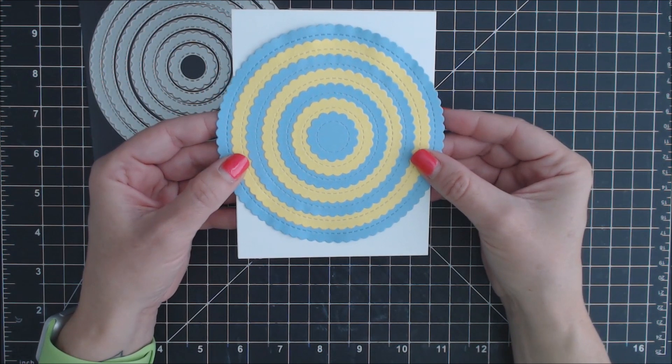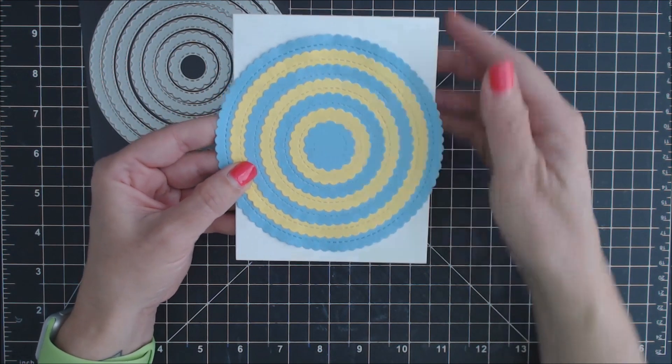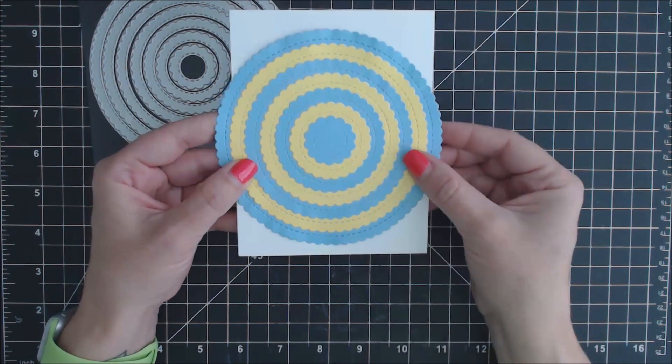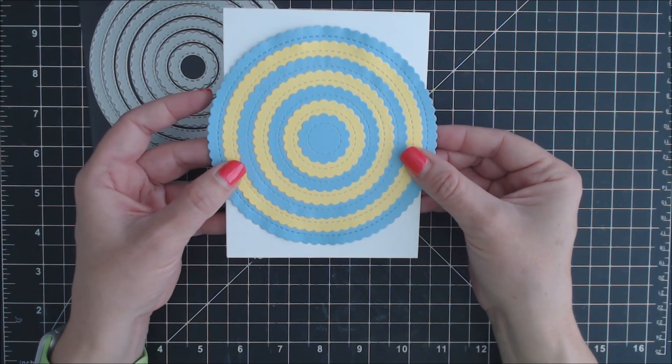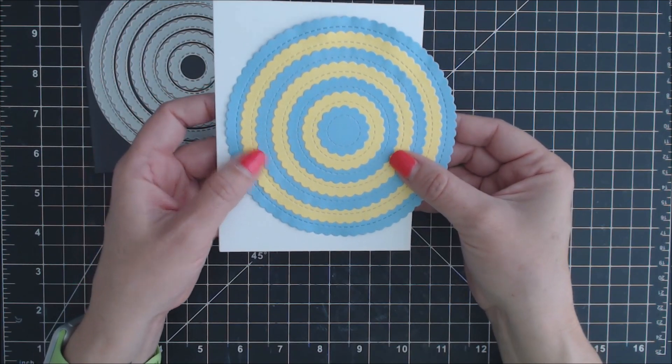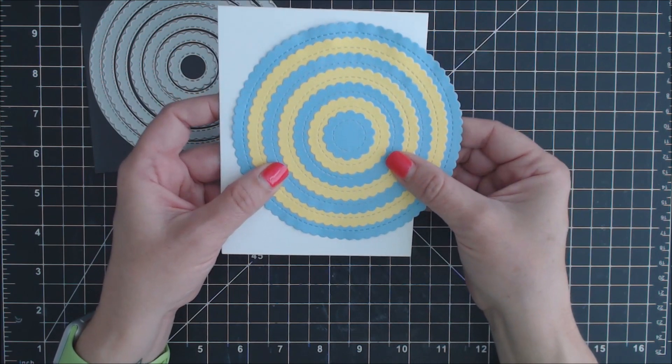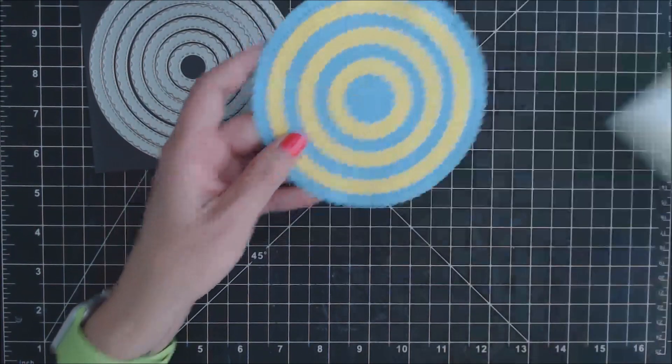Here's what it looks like on a regular size card base that's five and a half by four and a quarter. The largest one hangs off a bit but that can give a unique card or you can scoot over the largest one just to have it hanging off the side. Lots of different options here.